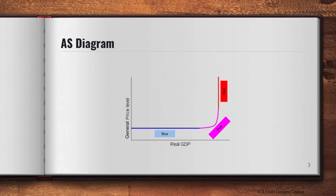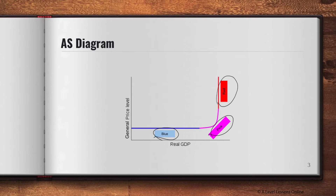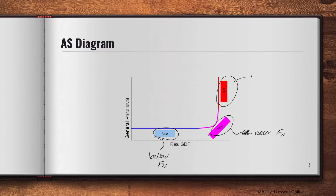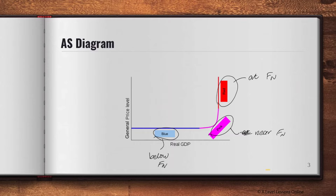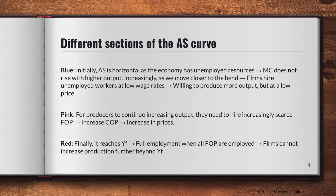The AS diagram usually has three different parts to it. I've labeled them by color: the blue part, the pink part, and the red part. The blue part is considered below full employment — we use 'Yf' or 'Fn' for full employment. The pink part is near full employment, and the red part is at full employment. I'll be using these three terms quite a bit, so take note of what they are. Your y-axis is always your general price level and your x-axis is real GDP.